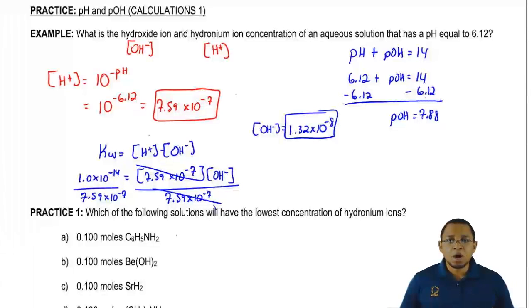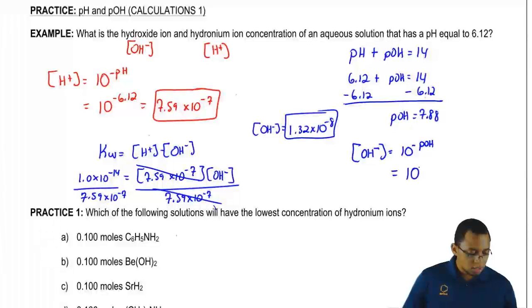So pOH equals 7.88 and remember, what's the connection between pOH and OH minus? You can just simply say that OH minus equals 10 to the negative pOH. And if you did 10 to the negative 7.88, you get the same exact answer for OH minus.